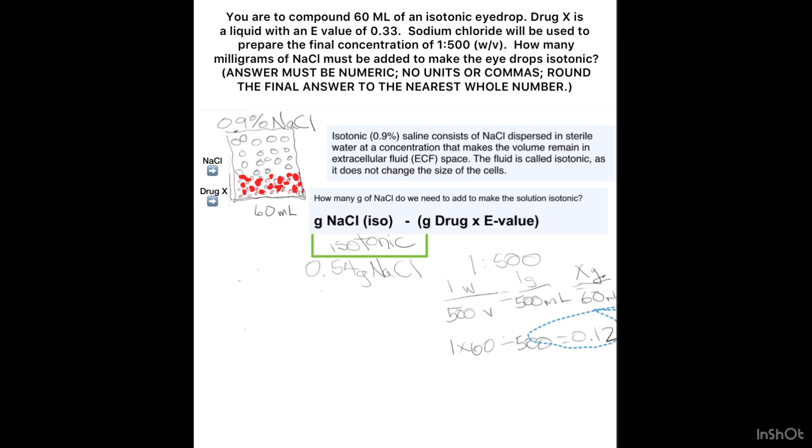But this is grams of drug, so we can't subtract it out of the grams of sodium chloride. That's why we need the E value. Multiply it by the E value, which they told us. We didn't have to calculate that ourselves. I get 0.0396 grams.